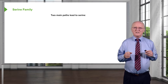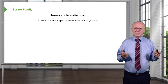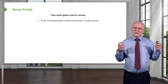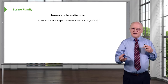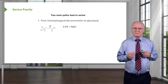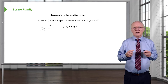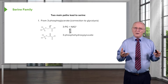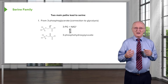There are two main pathways that lead to serine in our cells. The first starts from 3-phosphoglycerate, a molecule found in the glycolysis pathway — illustrating a linkage between glycolysis and amino acid metabolism. The reaction begins with an oxidation of 3-phosphoglycerate, producing 3-phosphohydroxypyruvate.